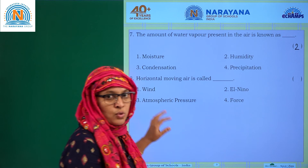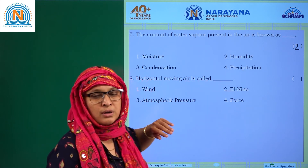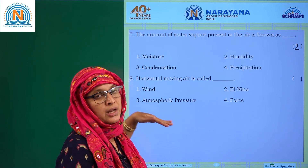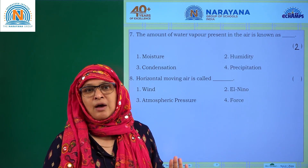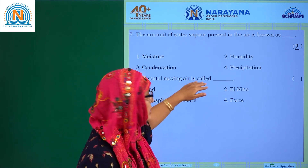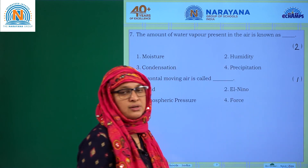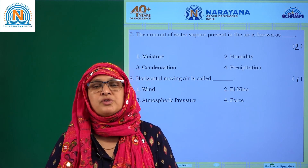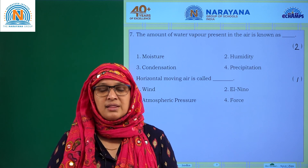Horizontal moving of air is called wind. Air always moves horizontally — it is wind. If wind moves vertically, havoc takes place. So horizontal moving of air is called wind — option 1 is the answer. With this we conclude our assignment. I hope you are preparing well for your exam and this assignment is going to help you for your future examination. Thank you.